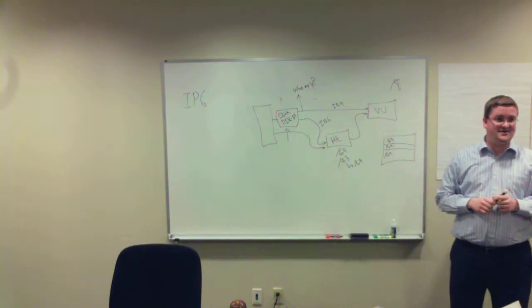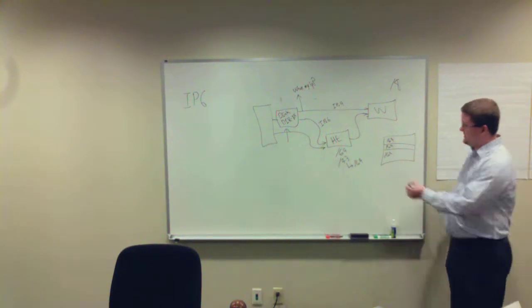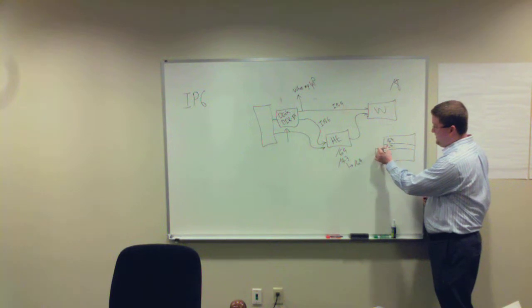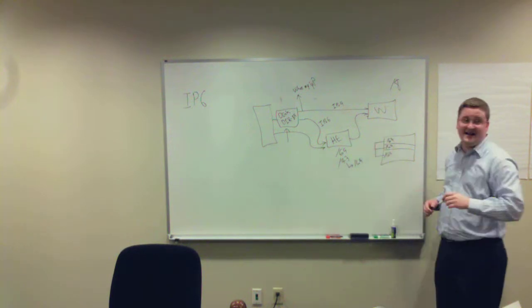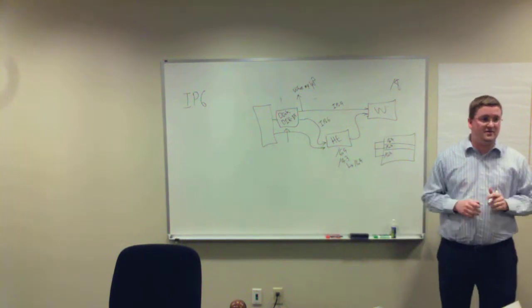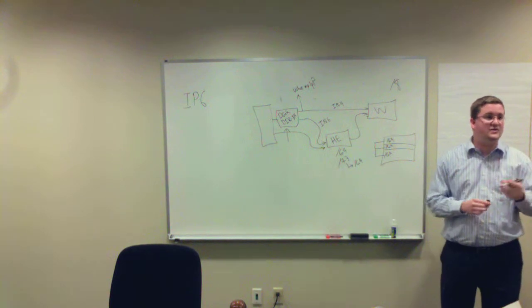But back to your question about segmenting. If you had a building in one of those satellites, you'd give each a slash 64, connect them up with a router, and they'd be just like you would today.